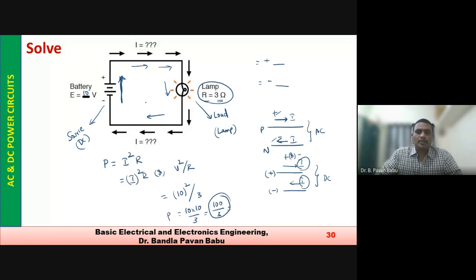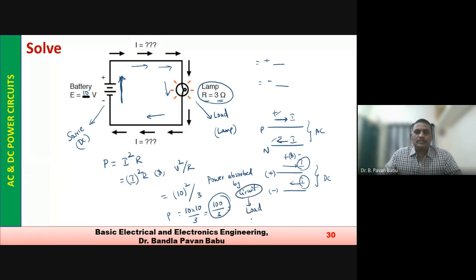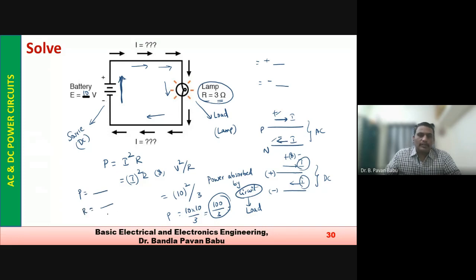Power absorbed by the load is 100/3 W. From this, since we now know the power value and the resistor value, we can easily find out the current.